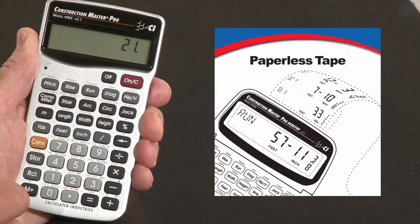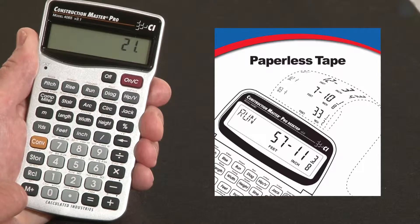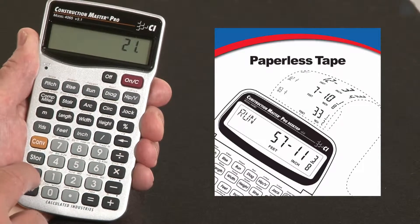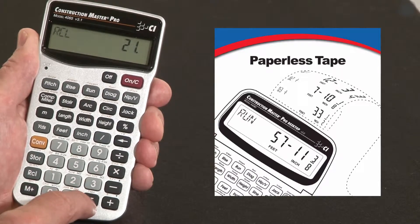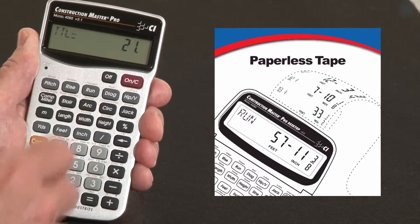That may be the total, maybe I'm not sure. One way to find out without re-entering everything is to recall our entries. We hit recall, and over the equal key it says tape. It says the total is twenty-one.